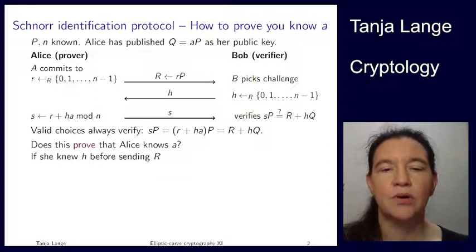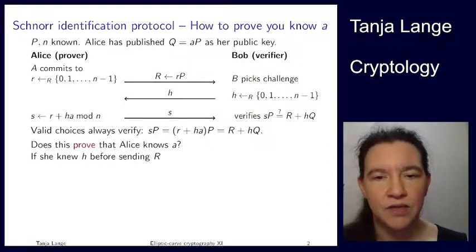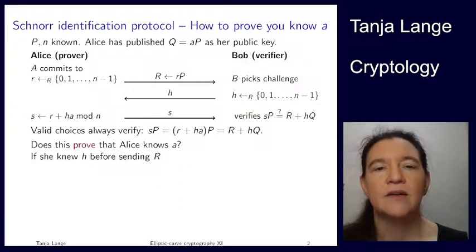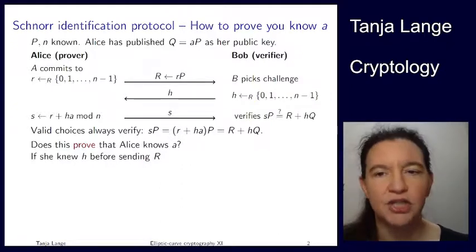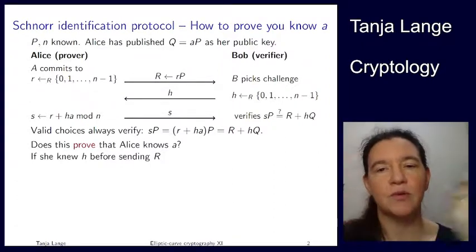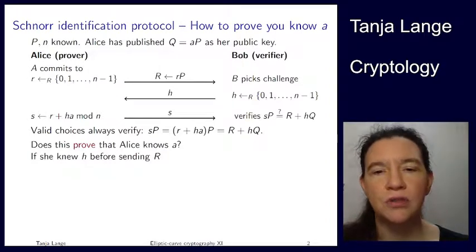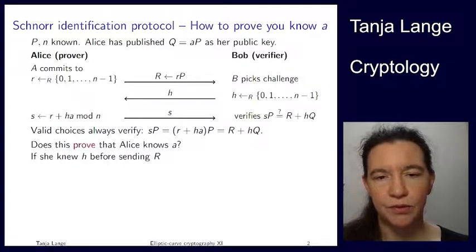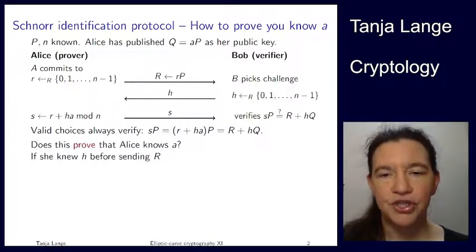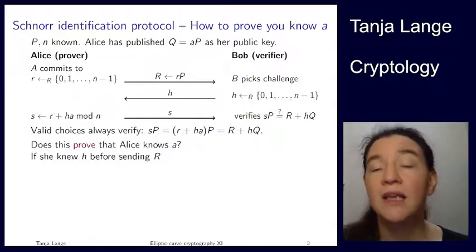Let's assume the protocol works a little bit differently. Let's assume she knows h before sending R — similar to a Diffie-Hellman key exchange where both start at the same time. Whatever the reason, let's assume she knows Bob's choice before. How could she cheat? She needs to come up with an s such that the R, which she can now pick depending on h and Q, verifies even if she doesn't know A.